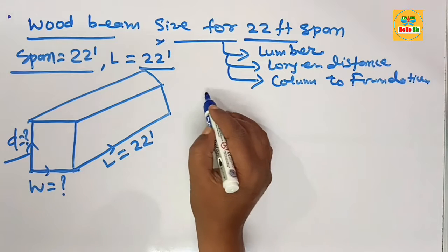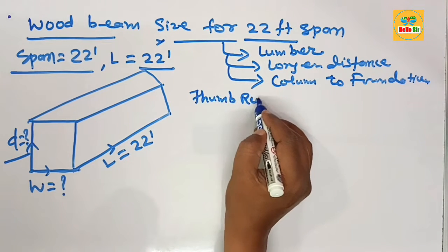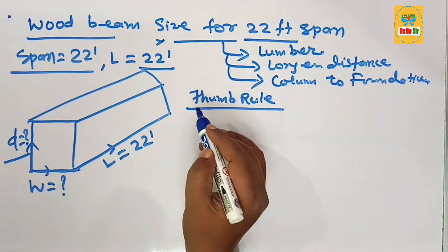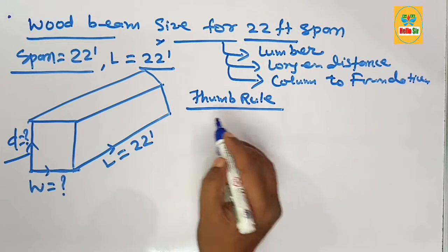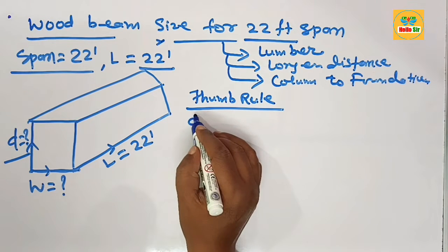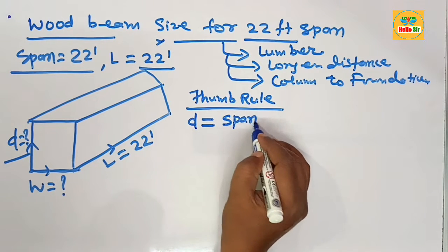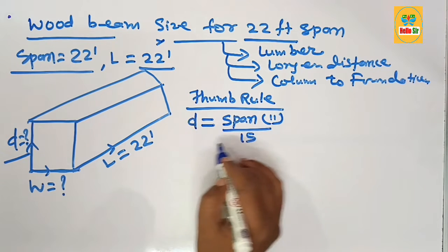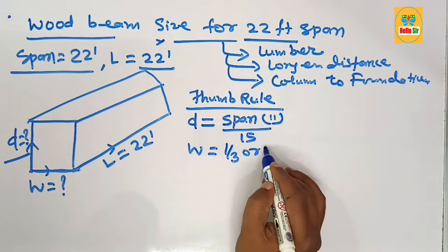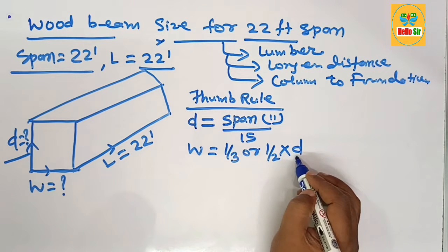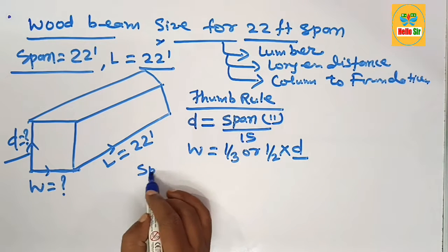We calculate wood beam size according to thumb rules. Sizing of a wood beam means finding the depth and width sections. As per thumb rule, the depth of the wood beam equals the span in inches divided by 15, and the width section of the beam is one-third to one-half of the depth section.